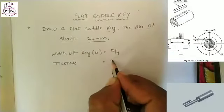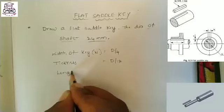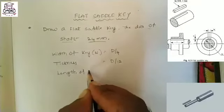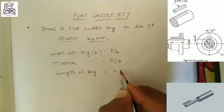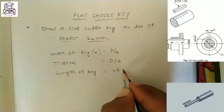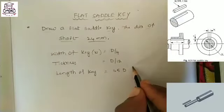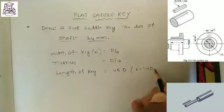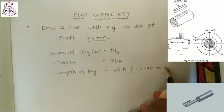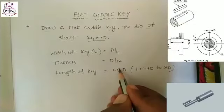Thickness of key equal to D by 12. The length of key equal to 1.5 into D. Actually, the length equal to 1.4 into D to 3D, so please take 1.5 into D.